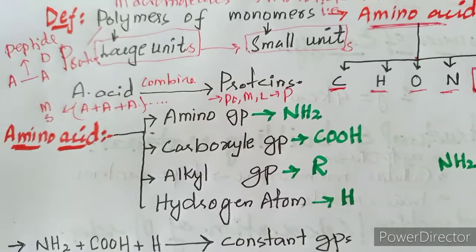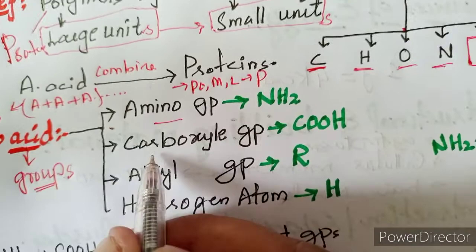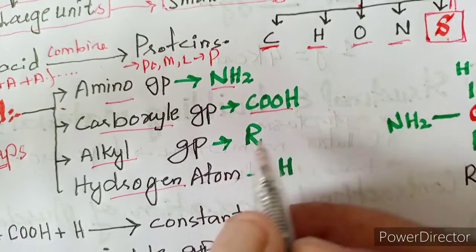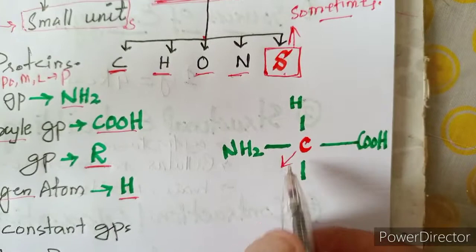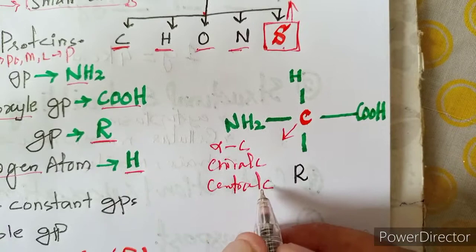An amino acid is composed of four groups. The four groups consist of: the amino group (NH₂), the carboxyl group (COOH), the alkyl group (R), and the hydrogen atom (H). The central carbon is also called the alpha carbon or chiral carbon.